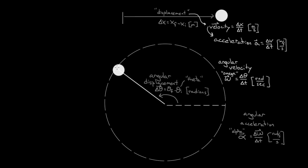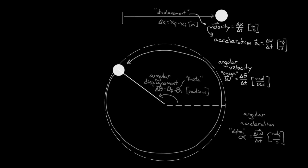Imagine you wanted to describe not just the ball on the end of the string, but all points on the string as well. If you limited yourself to only the regular motion variables, you'd realize that this ball goes through a circle in a certain amount of time, and every point on this string also goes through a circumference in that same amount of time. So the velocity of the ball is gonna be greater than the velocity of points on the string that are closer to the center.